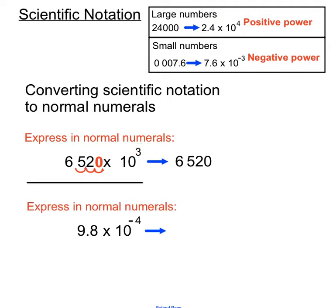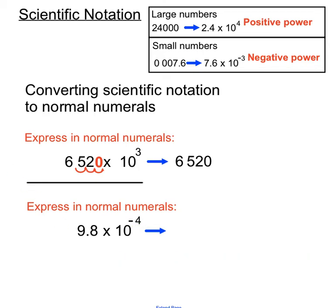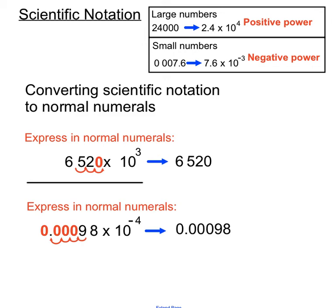If we're expressing 9.8 times 10 to the minus 4 in normal numerals, we remember that a negative power means we're expecting a 0-point type small number as our final result. So we move the decimal point to the left. We focus on the fact that it's a minus 4, moving the decimal point 4 jumps to the left — 1, 2, 3, 4. The decimal point moves across and we fill in the spaces with zeros to hold their place values. In the end we get 0.00098 as our final result.